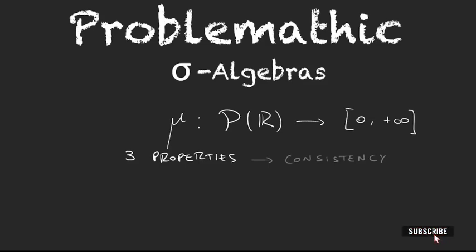The problem is we're asking for mu to be defined over all parts of the set we are working with — we want to be able to measure everything. But when we try to measure everything and maintain consistency, we get contradictions. So we're going to weaken this property: we'll sacrifice a few sets and gain consistency. From the last video it is clear that the Vitali set is going to be one of the sets we won't be able to measure. So we have to define sigma algebras.